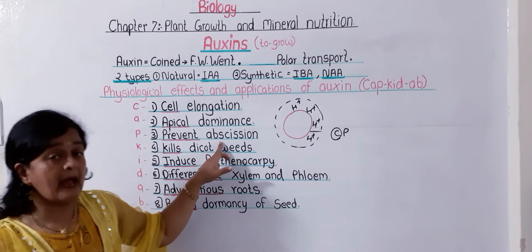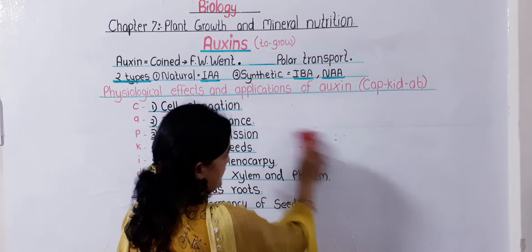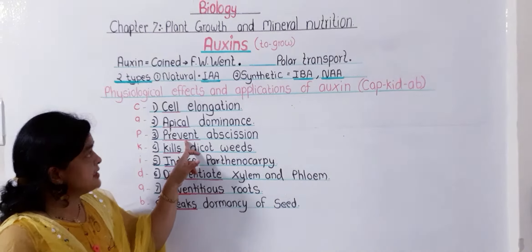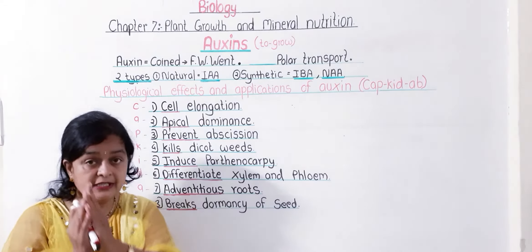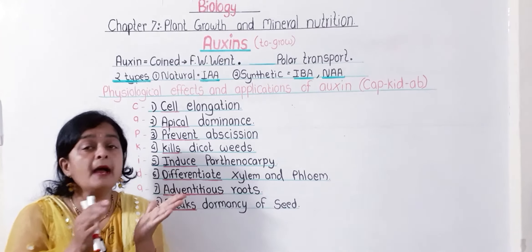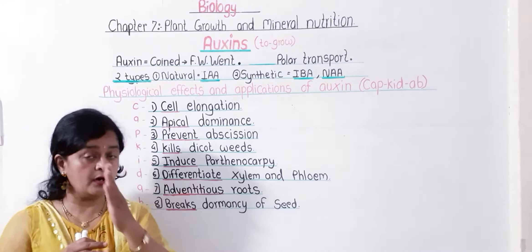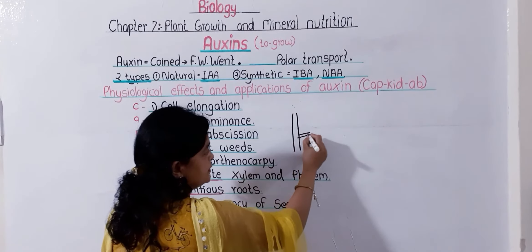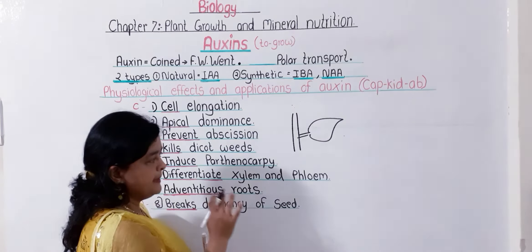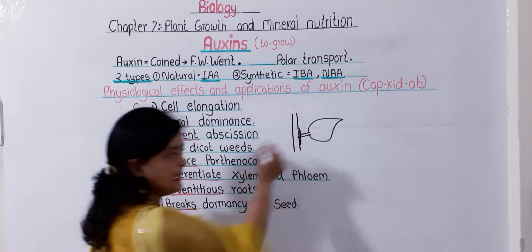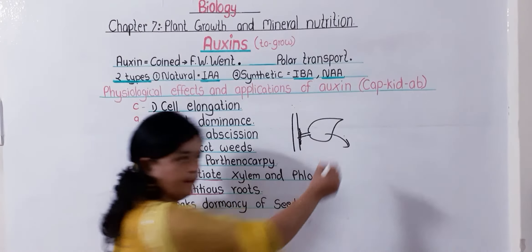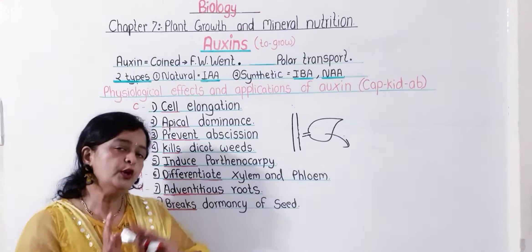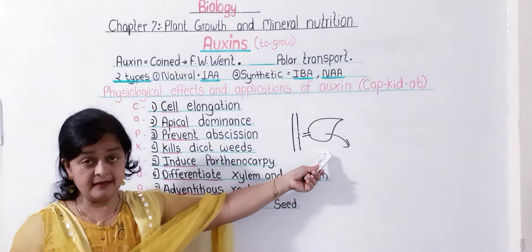The third function is that auxin prevents abscission. Abscission means falling or dropping — dropping of baby fruit, leaf, or flower. Auxin prevents the dropping of immature leaves, flowers, or fruits. For example, in a plant, when a leaf matures, an abscission layer forms, which causes the leaf to drop. Auxin prevents the formation of this abscission layer, so no abscission of young leaves, young flowers, or young fruits occurs.